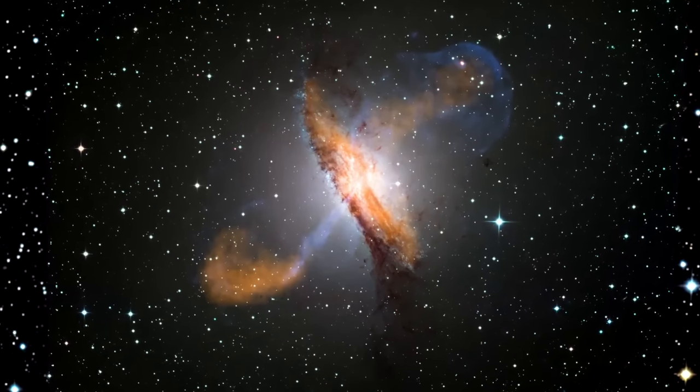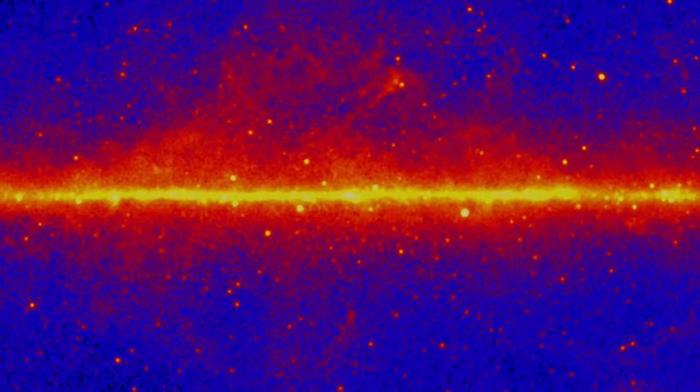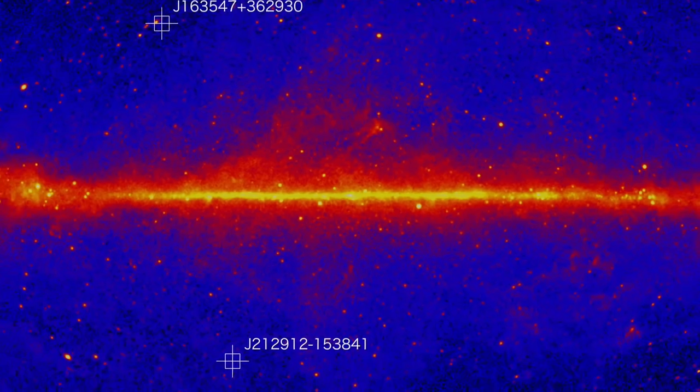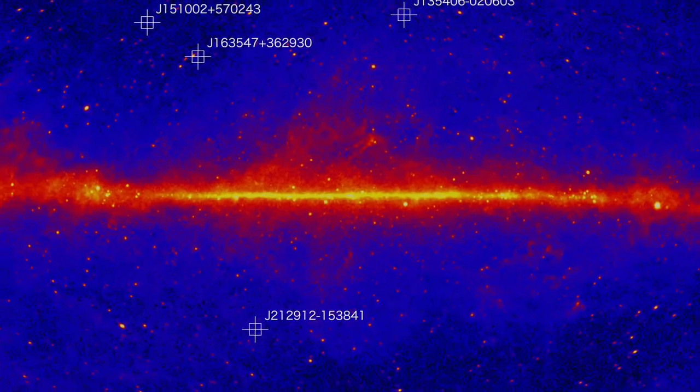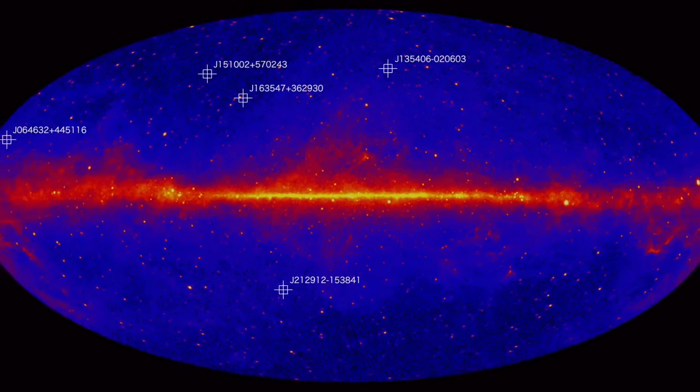These objects allow scientists to map out how the most powerful jets in the universe evolved over cosmic timescales. Scientists hope that additional examples will help them better understand how supermassive black holes develop so rapidly in the early universe.